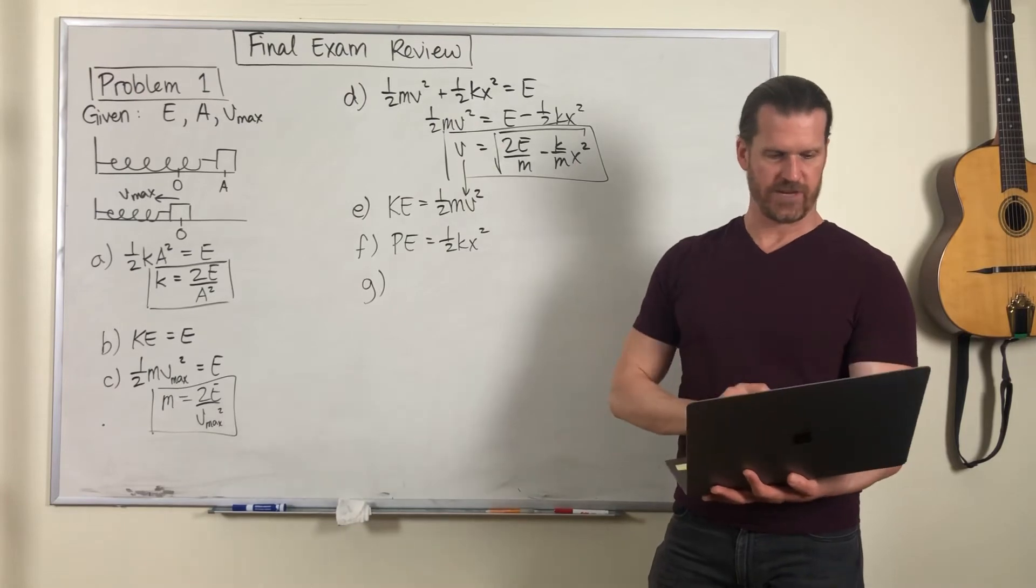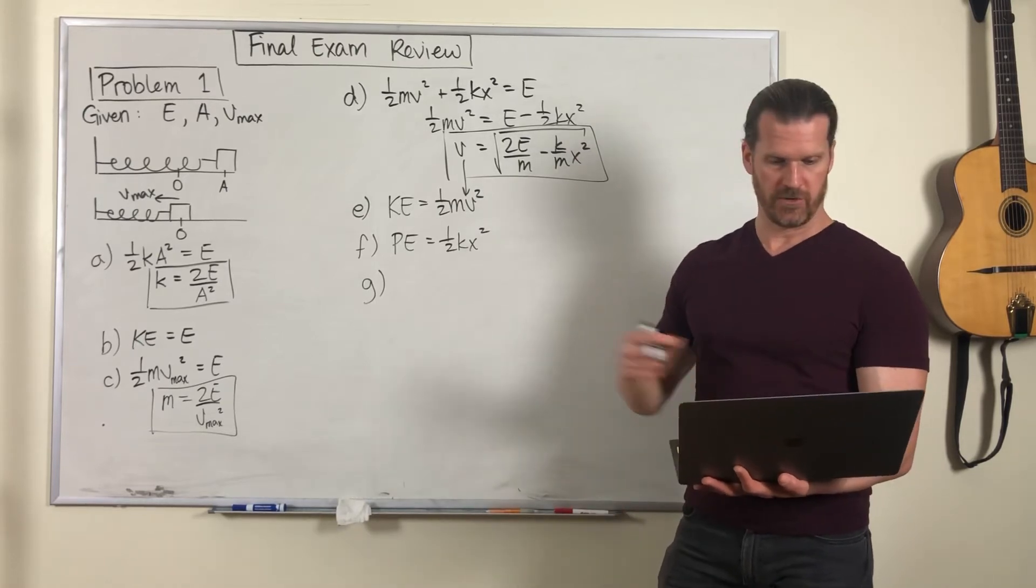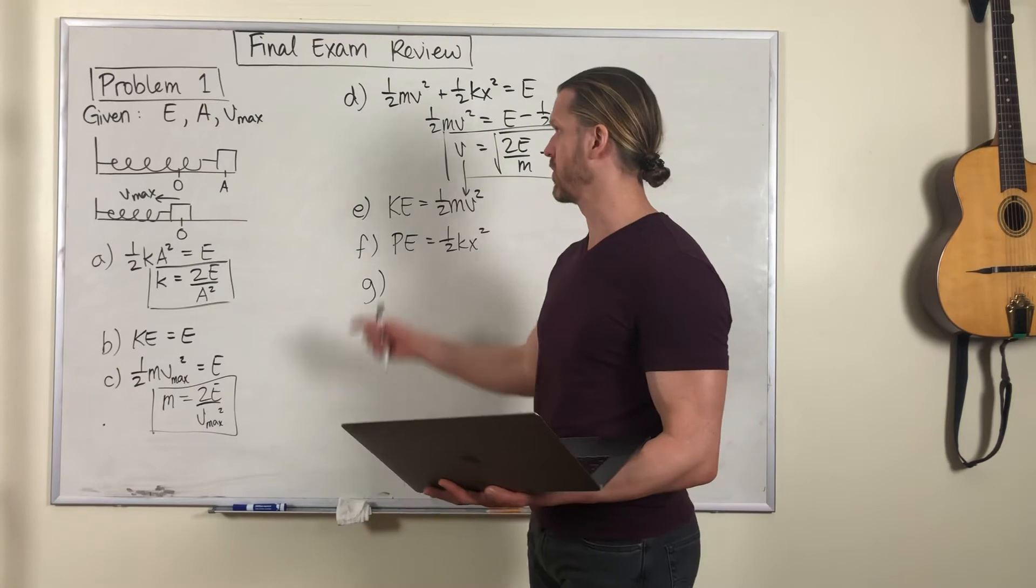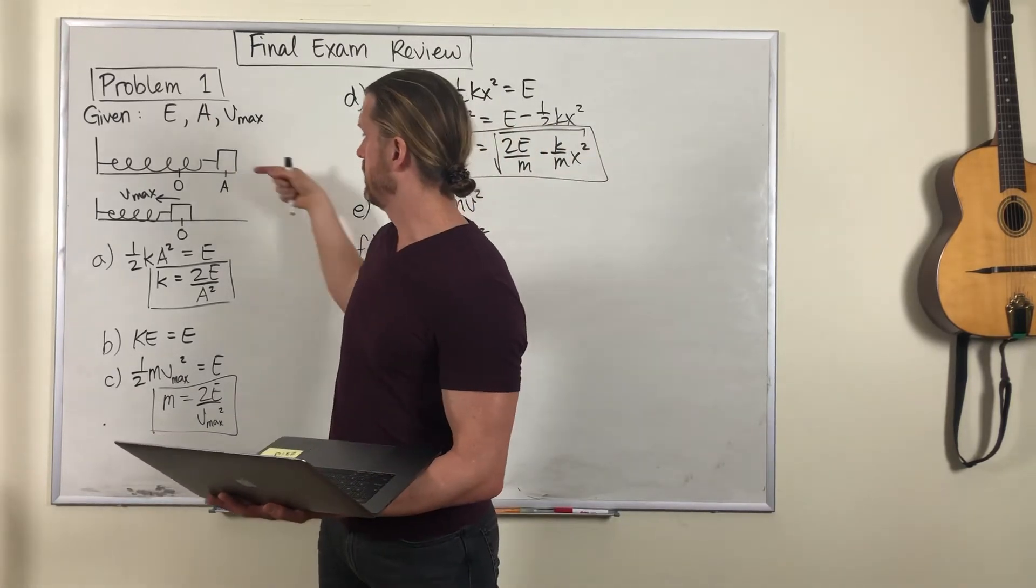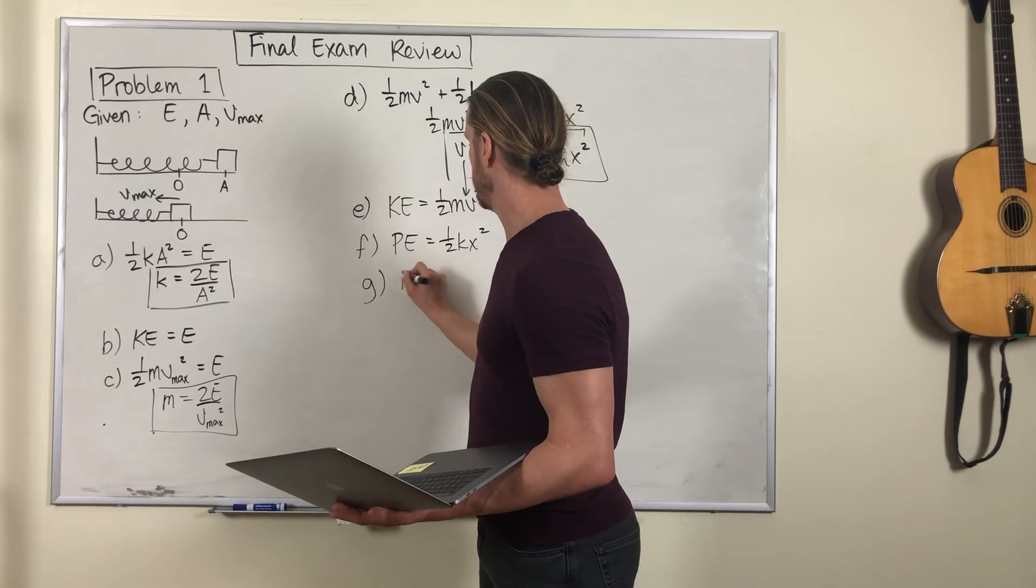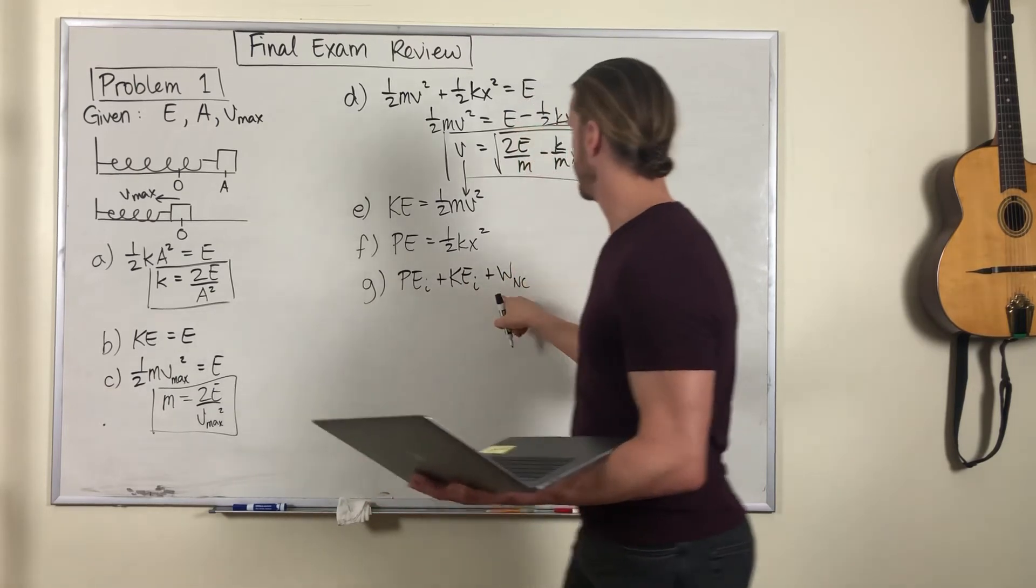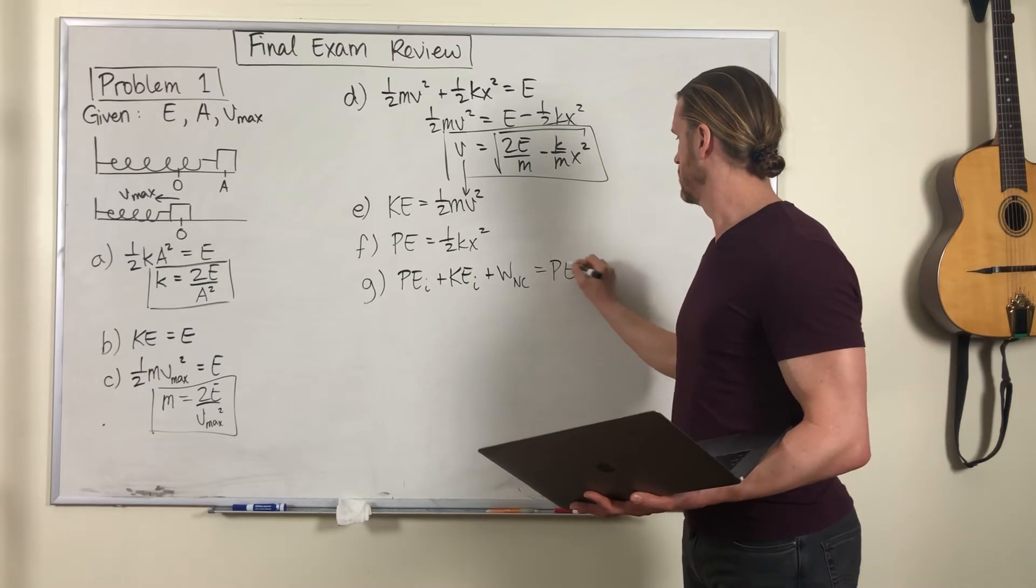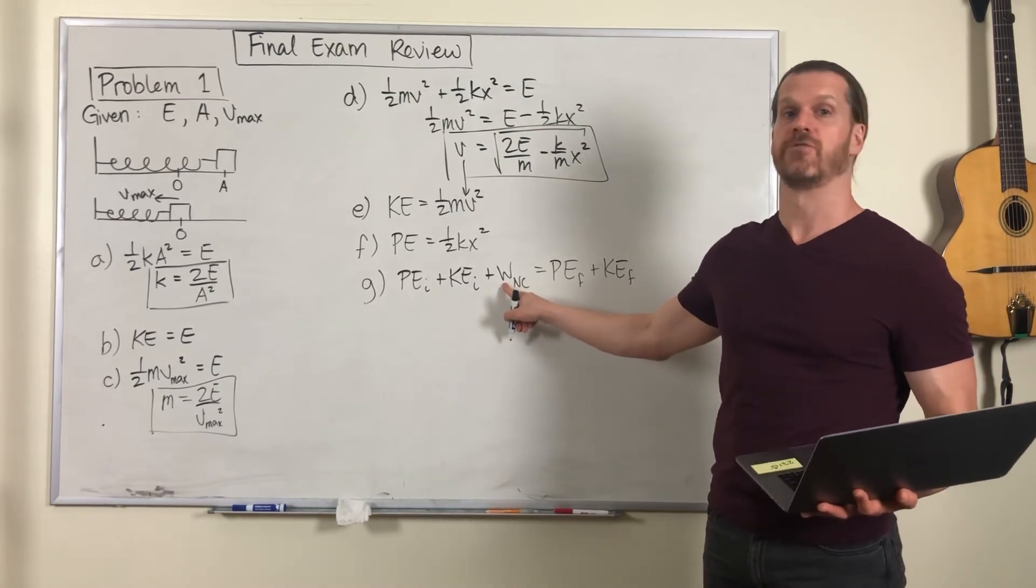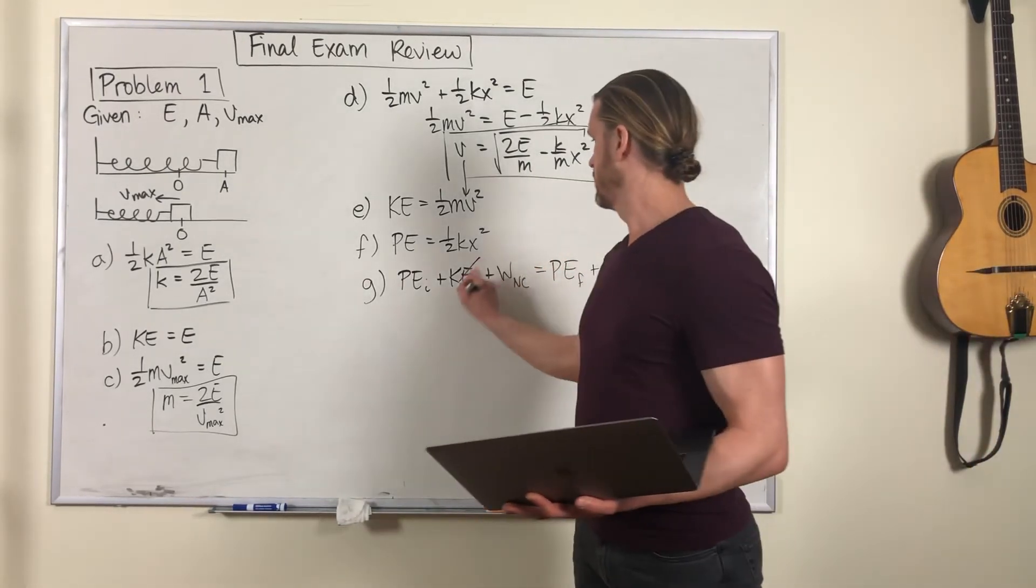And last one, part G. Suppose the same system is released from rest at some initial position, and it loses some amount of energy by the time it reaches the first turning point. So you let it go over here, passes through equilibrium, reaches the turning point, but there's friction, so it's lost some energy. So what we do is we use the law of conservation of energy with non-conservative forces. That's where you're going to account for the energy that's lost due to friction.